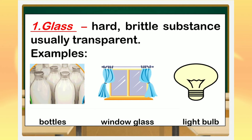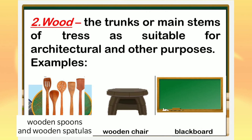When we say glass, it is a hard, brittle substance and usually transparent. These are the different examples of materials made up of glass. Can you give your own examples? Another one is wood — the trunks and stems of trees suitable for architectural and other purposes. These are some examples of materials made up of wood.